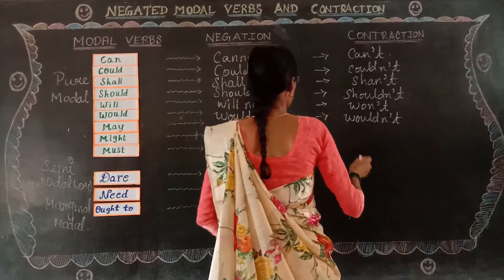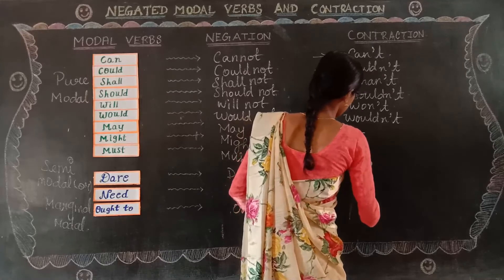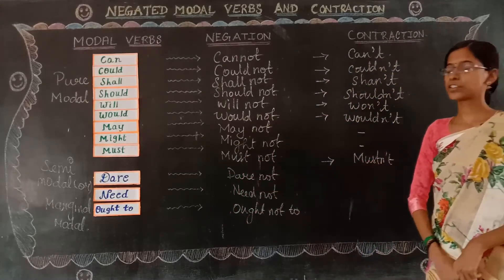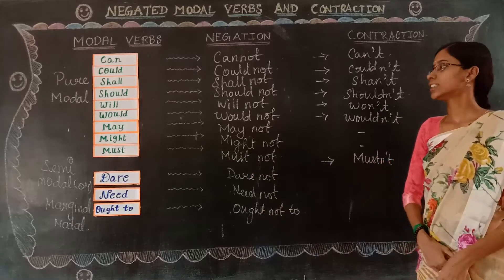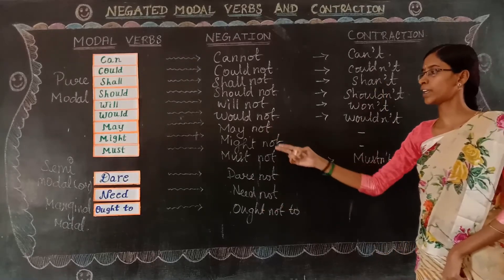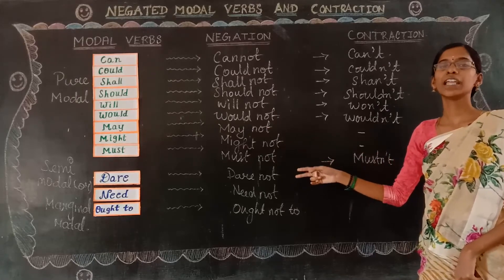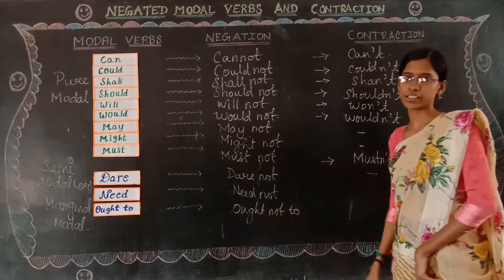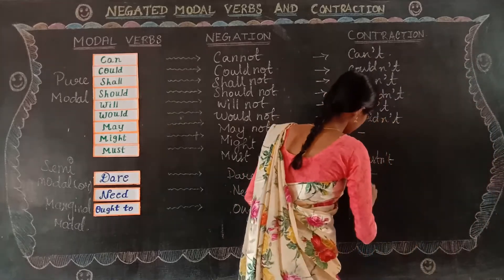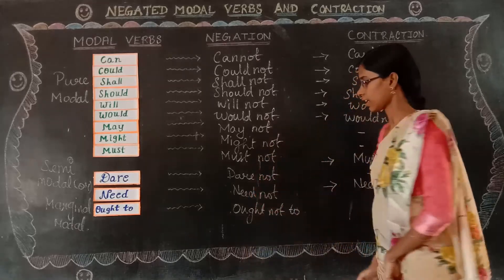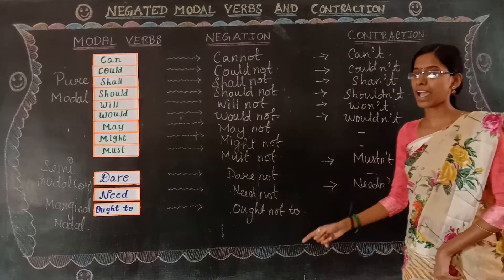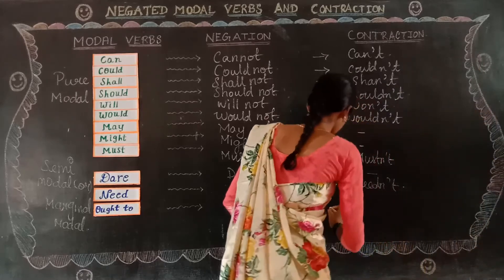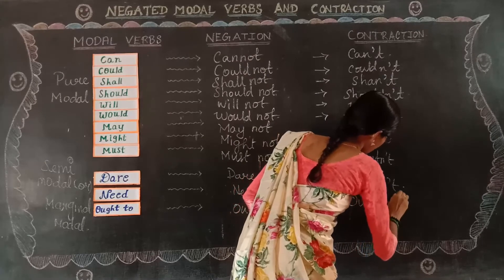Coming to the next ones: 'must not' becomes 'mustn't' (putting the apostrophe in). 'Dare not' also does not have a contraction form — as I said, 'may not,' 'might not,' and 'dare not' do not have any contraction form. 'Need not' becomes 'needn't' (need apostrophe T). And the last one: 'ought not to' contracts to 'oughtn't to' (ought apostrophe T, two). These are the contraction forms of modal verbs.